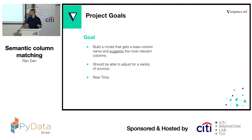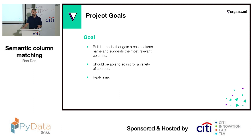So our goal is to build a model. This model gets a column and it will predict the most relevant column to join with. Also, because our customer has many companies, the model should be able to adjust whenever we get a new company to join the mix. And one of the key reasons why they came to us with the product is because it took them a lot of time to join the data together, so this solution needs to be in real time.